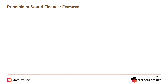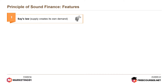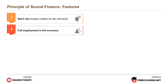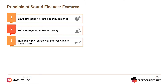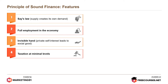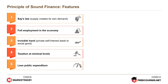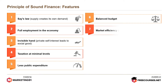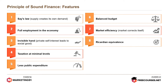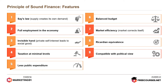The features of the principle of sound finance are: Say's law — supply creates its own demand; full employment in the economy; invisible hand — private self-interest leads to social good; taxation at minimal levels; less public expenditure; balanced budget; market efficiency — market corrects itself; Ricardian equivalence; and compatible with political view.